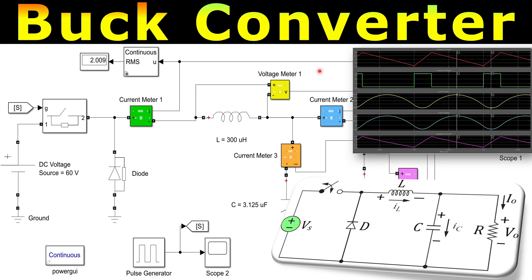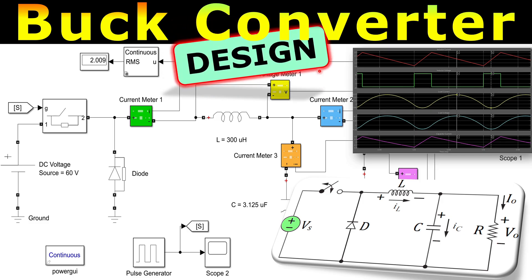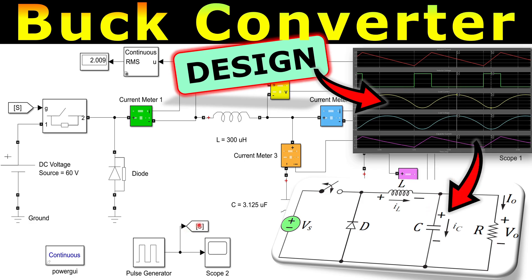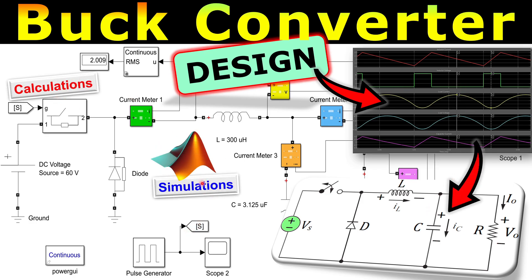Greetings and welcome to a new video about power electronics. In this example we will discuss the buck converter design. We have discussed in previous examples the analysis of this buck converter circuit, where we calculated the output current, output voltage, and ripple currents. In this case we will use that data to determine the component values for the inductor, the capacitor, and the resistor, step by step, and also verify this in MATLAB Simulink simulations.